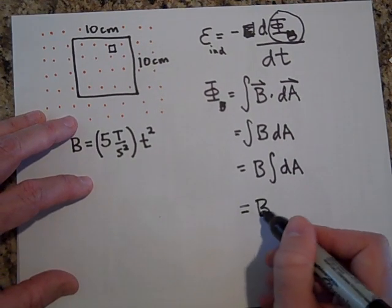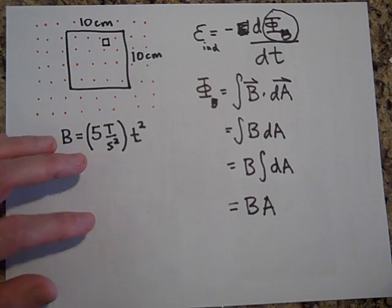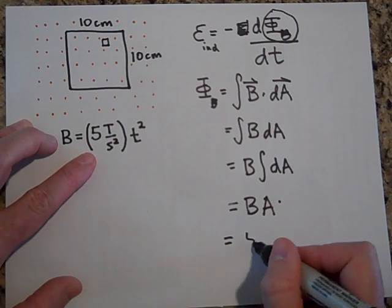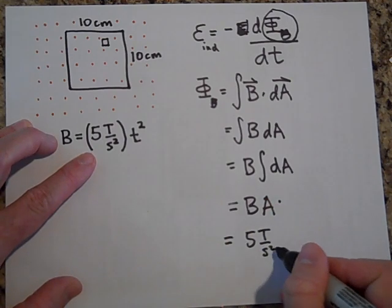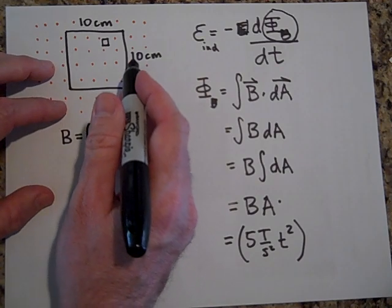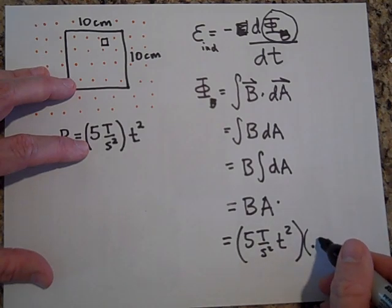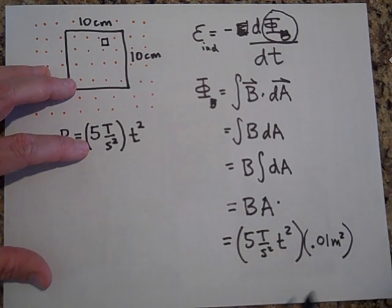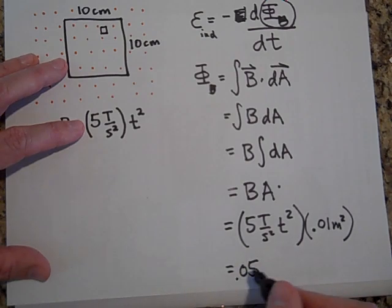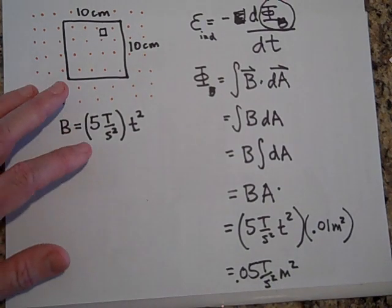So then when I do that, I just have B times, when I add all those up, just B times A, which is often what you get when you're figuring out flux. Often, but definitely not all the time. So if I do that, then I'll just do B, which is 5 Teslas over second squared times T squared, times A. And A is going to be just 10 centimeters by 10 centimeters. Remember, let's be in the MKS system. So that's going to be 0.1 meters times 0.1 meters, which is going to give us 0.01 square meters. So that's going to be, if I pretty this up a little bit, 0.05 Teslas over second squared times meters squared times T squared.